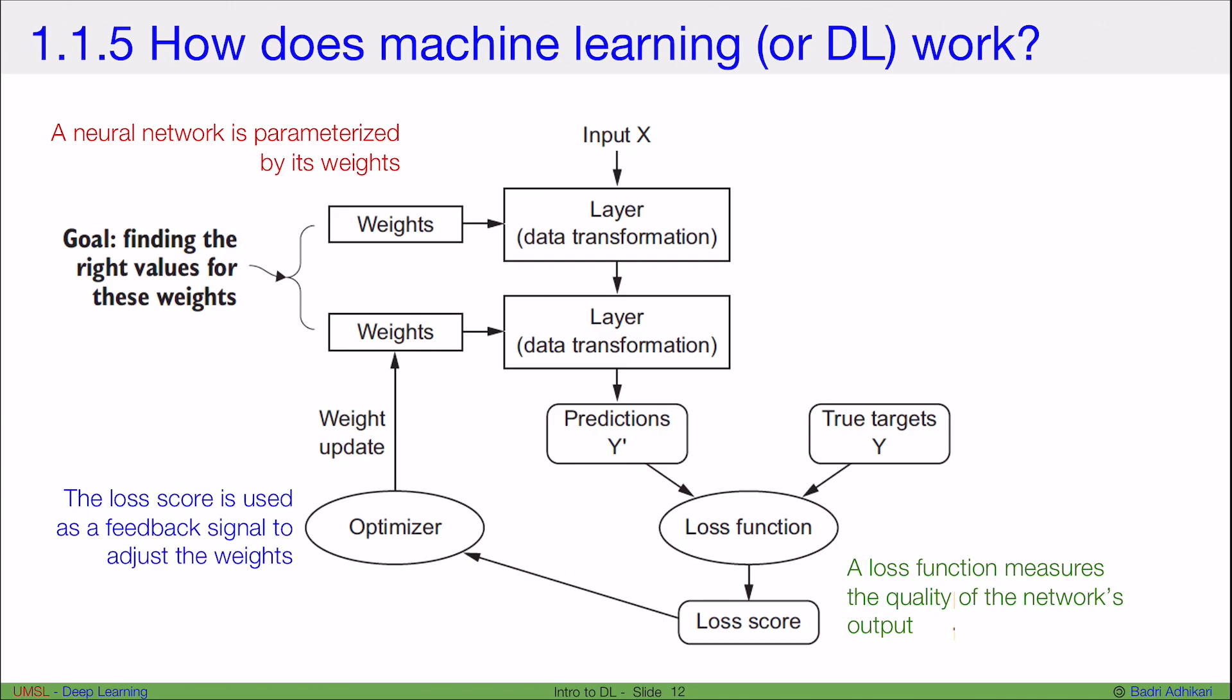And now finally, the final piece is something known as the optimizer. What the optimizer does is take your loss score and give a signal back to your model to say, hey, your output was 8, but the correct output was 9, you're off or you're lower by 1. So can you change these weights, adjust these weights, such that next time when the same input comes in, you can either get 8.8 or 8.9 or something closer to 9. And this loss score is used as a feedback signal to update the weights.